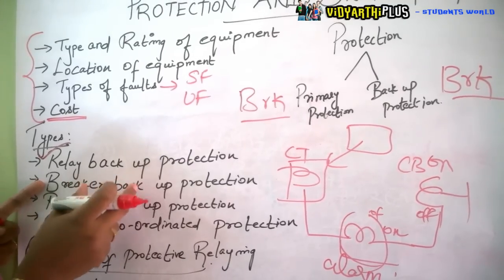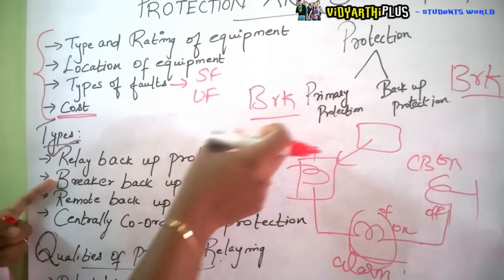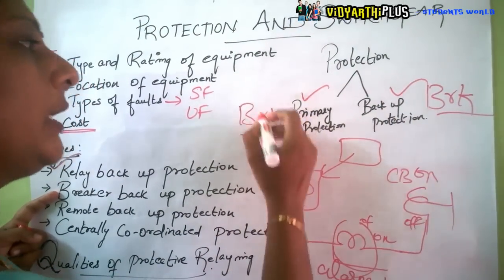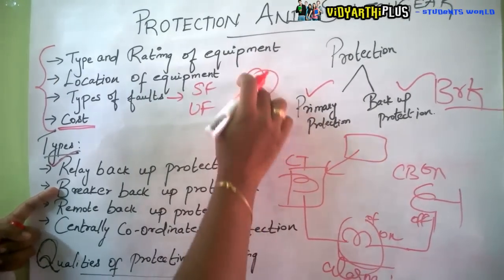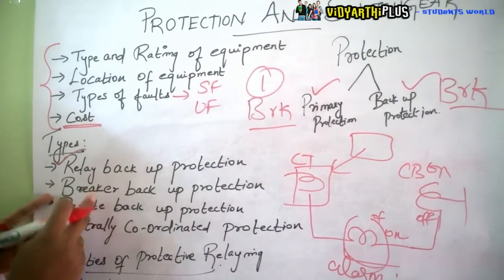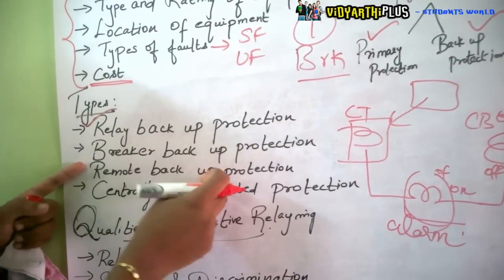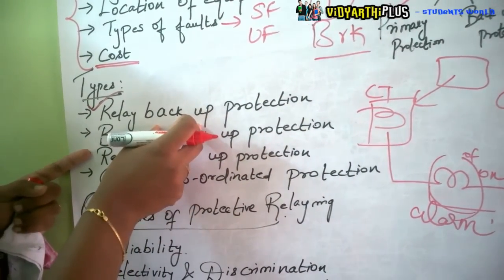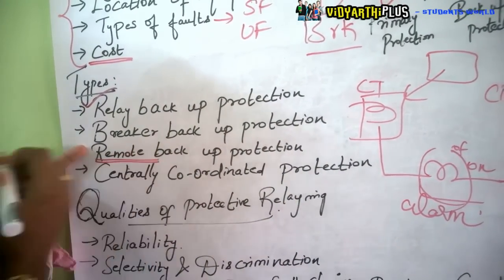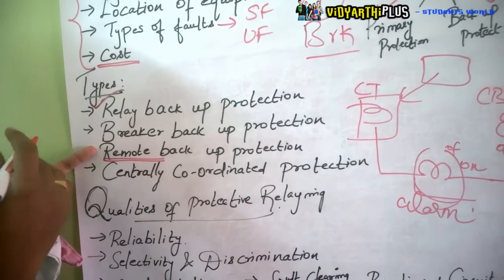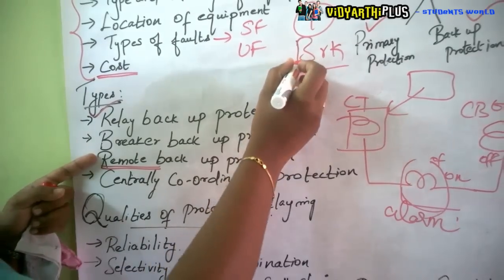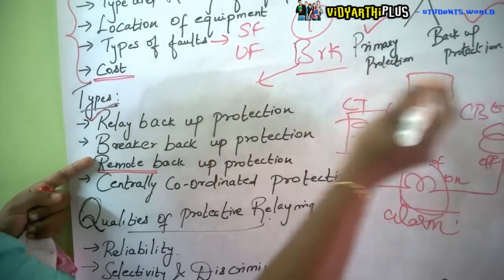In breaker backup protection, the same breaker is used for both primary protection and backup protection — there is only one breaker employed. Remote backup protection is similar to breaker backup protection, except that the breaker is placed in a different location apart from your equipment.